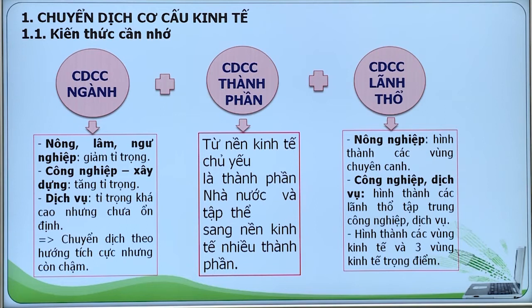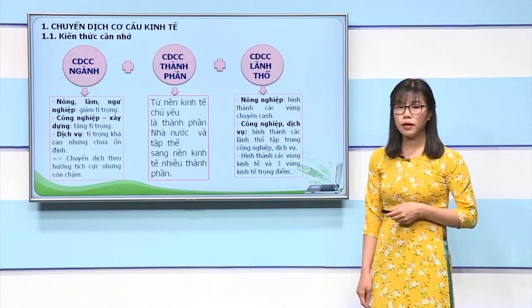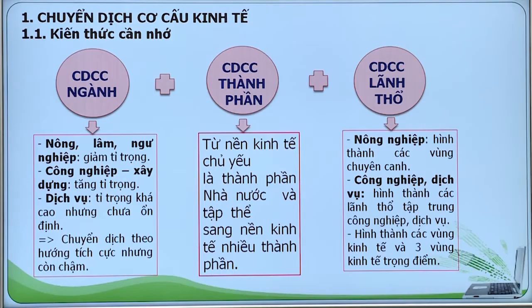Hình thành nên 7 vùng kinh tế là vùng Trung Du miền núi Bắc Bộ, vùng Đồng Bằng Sông Hồng, vùng Bắc Trung Bộ, vùng Duyên Hải Nam Trung Bộ, vùng Tây Nguyên, vùng Đông Nam Bộ và vùng Đồng Bằng Sông Cửu Long. Và hình thành nên 3 vùng kinh tế trọng điểm: vùng kinh tế trọng điểm phía Bắc, vùng kinh tế trọng điểm miền Trung và vùng kinh tế trọng điểm phía Nam.